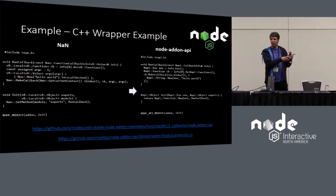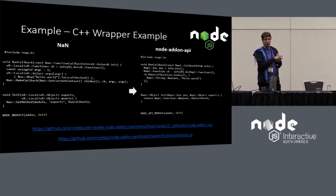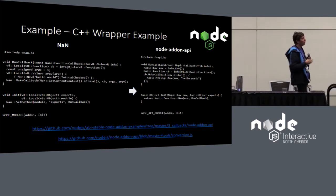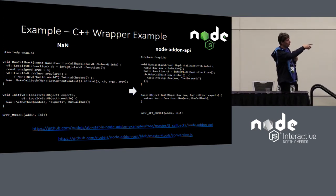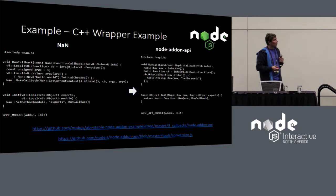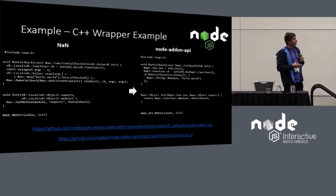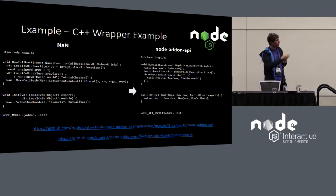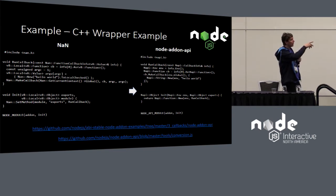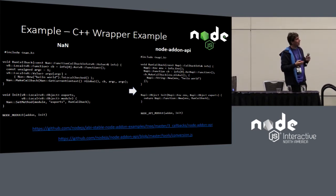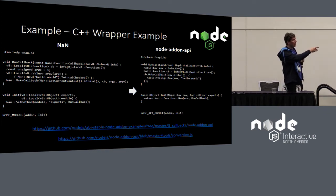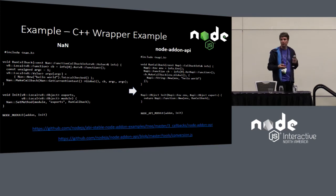Looking at the same example ported to the Node add-on API, you should see it's very familiar. Instead of NODE_MODULE, we're using NODE_API_MODULE passing in that initialization function. Using the classes, you can very easily extract the first parameter from the callback info. We can invoke the callback by calling make_callback with a string created inline. The code ends up being as simple or simpler than the NAN versions, and our init function creates a function and returns it, just as before.